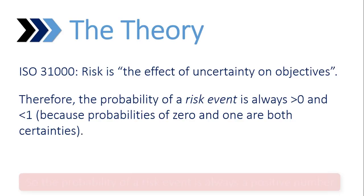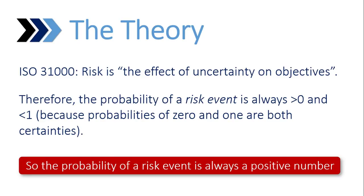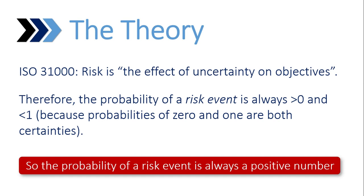Just to explain the theory behind my model and some of the language I've been using: we're familiar with the idea that risk is the effect of uncertainty on objectives. That statement itself contains a lot of meaning, because quite clearly it means that the probability of a risk event must be greater than zero and less than one — if you have a probability of zero or one, that implies certainties, and risk management is about uncertainty. Once we've established that, we know that the probability of a risk event is always a positive number. Zero is not a positive number, but anything above zero is. The word 'positive' has now entered the language of this presentation.